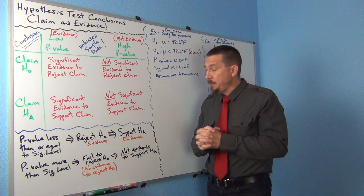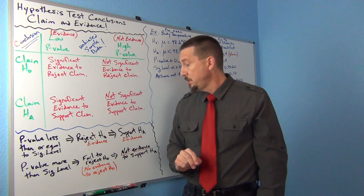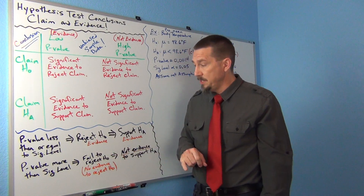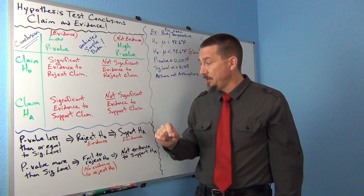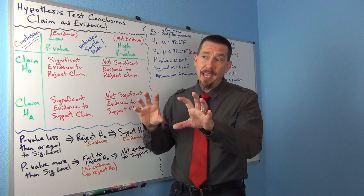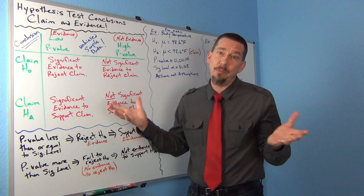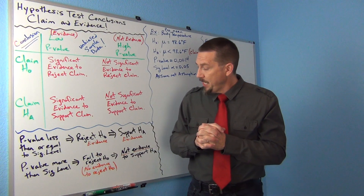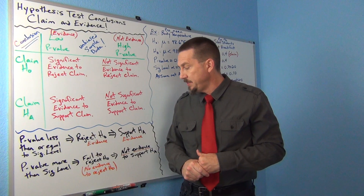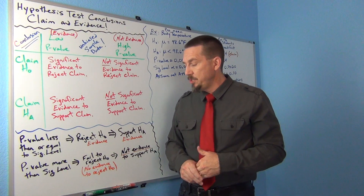For a high p-value — if the p-value is more than the significance level, more than our alpha — then we're going to fail to reject the null hypothesis. When you have a high p-value, it could just be sampling variability. In other words, the null might be correct and your sample data disagrees just because of sampling variability, or maybe the null is wrong. It's almost like you can't tell if the null is right or wrong. A high p-value means we fail to reject the null — we do not have evidence to reject it.